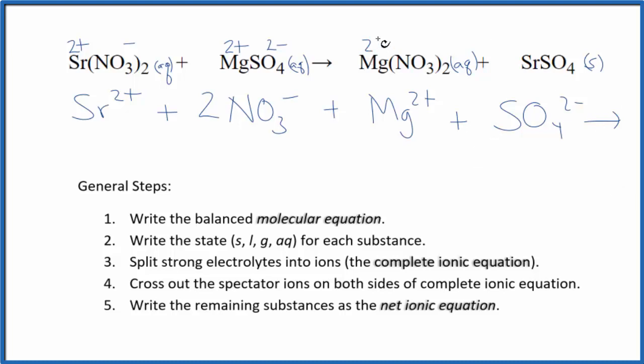For the products, we have 2+ and the nitrate negative. So we have Mg2+, plus 2 nitrate ions. And then in net ionic equations, when we have a solid, we don't split that apart. So that'll just be SrSO4, strontium sulfate.